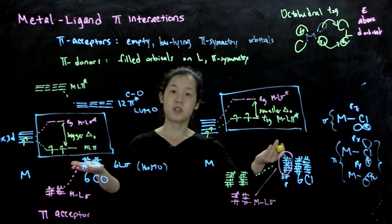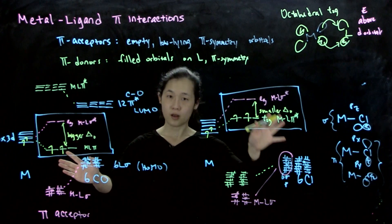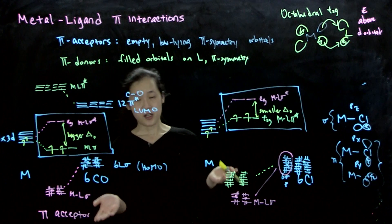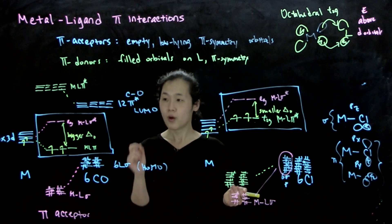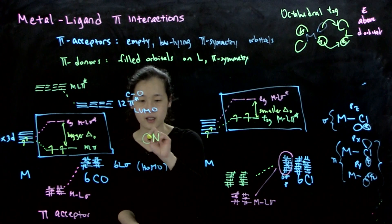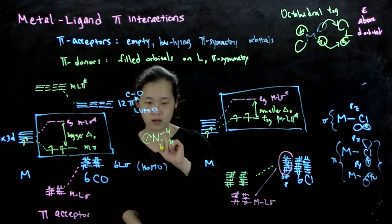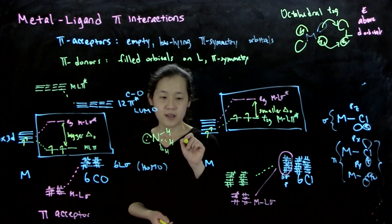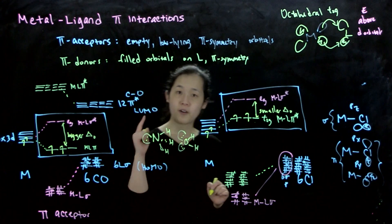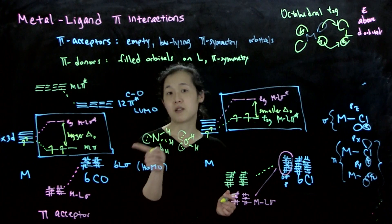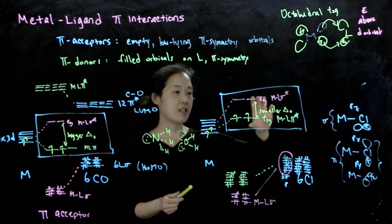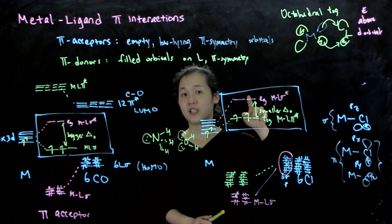So these are the two situations: for pi acceptors, bigger delta; for pi donors, smaller delta. And then sigma-only might be somewhere in the middle. There are differences in sigma donation — we saw that ammonia ligands and water ligands are both sigma-only donors, but ammonia is further to the right on the spectrochemical series because it's more sigma donating. You can have differences in sigma-only ligands, but that results in a change in how sigma-star your eg orbitals are.